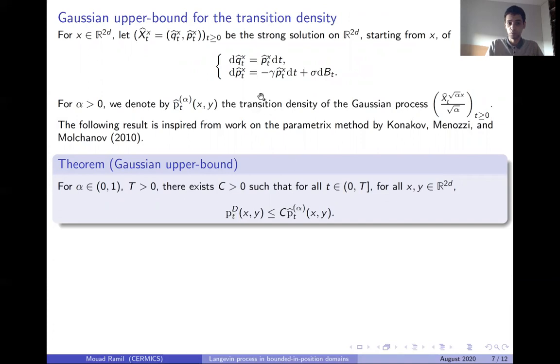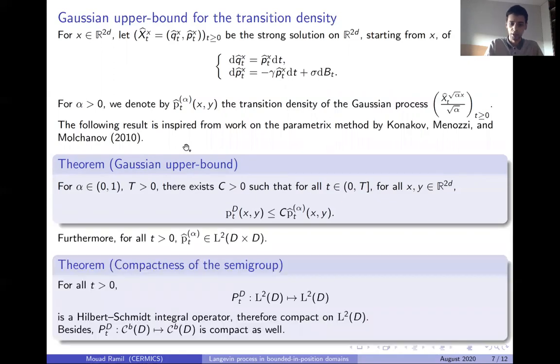We are able to obtain an explicit Gaussian upper bound of this transition density. The Gaussian upper bound is the transition density of the following Gaussian process. This is done inspiring ourselves from previous work by Konakov, Menozzi, and Molchanov in 2010.